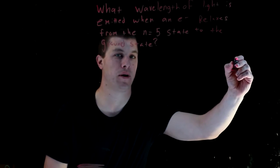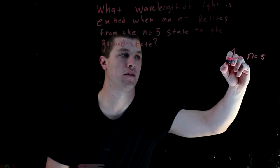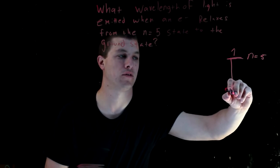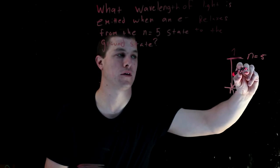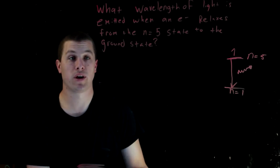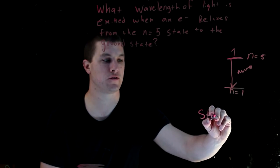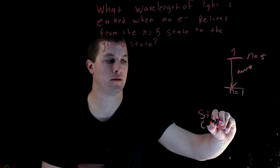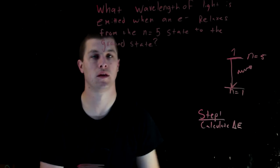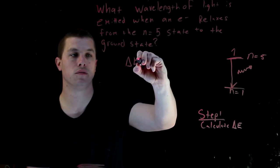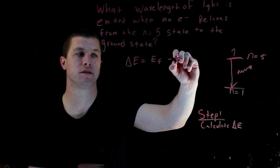We're thinking about an electron starting out in the n equals 5 state and dropping all the way down to the ground state, n equals 1. That's an emission process. There are two steps. Step one is to calculate delta E.